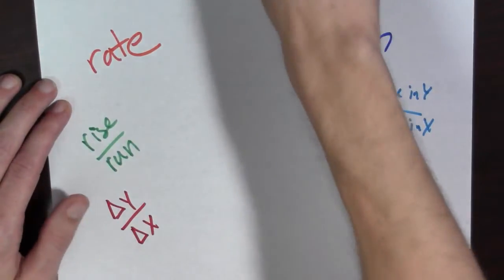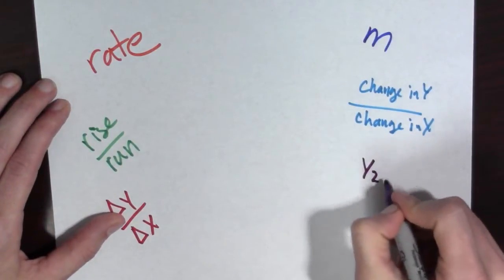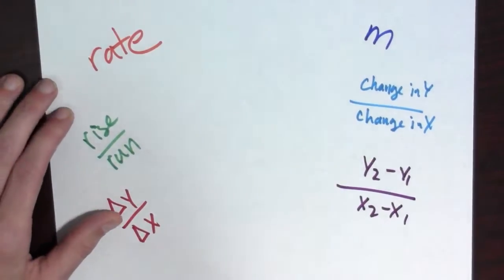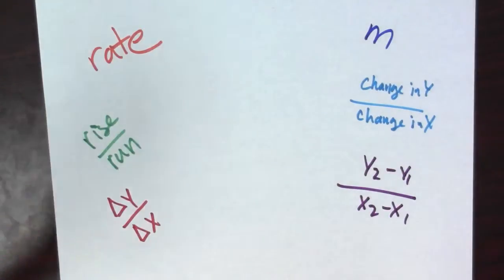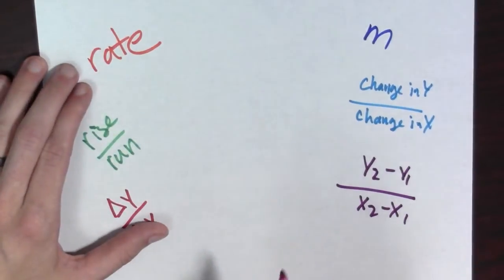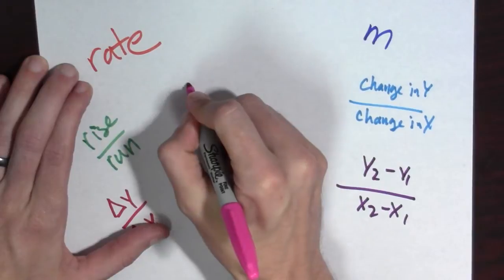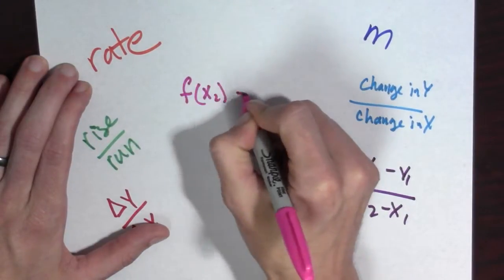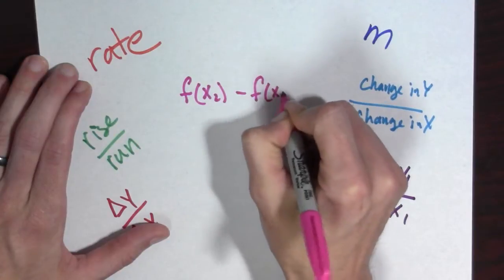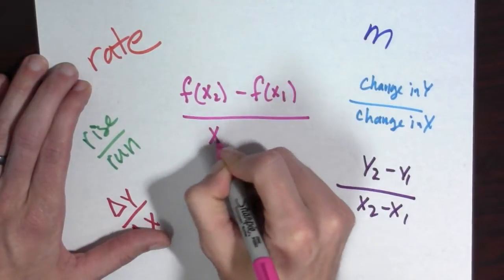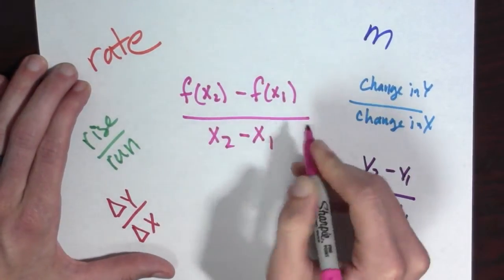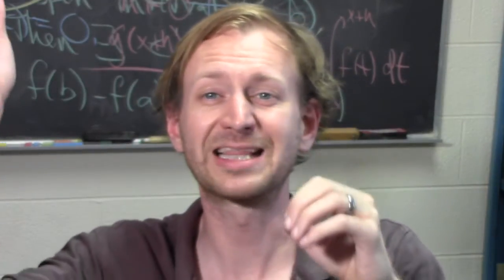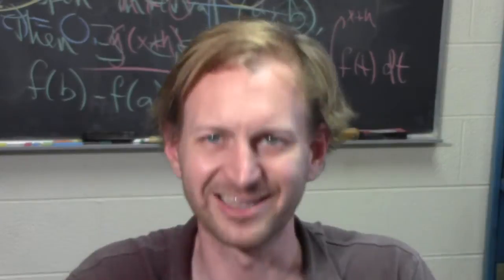Slope is also y2 minus y1 over x2 minus x1. And finally, the version that we're going to use the most is this one: Slope is f of x2 minus f of x1 all over x2 minus x1. We start out by looking at the slope of what are called secant lines.